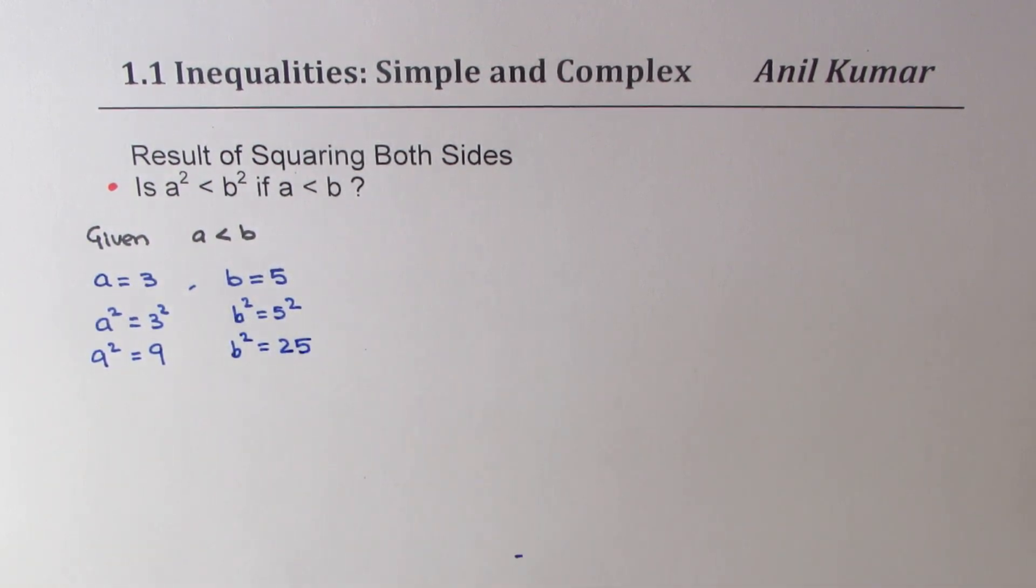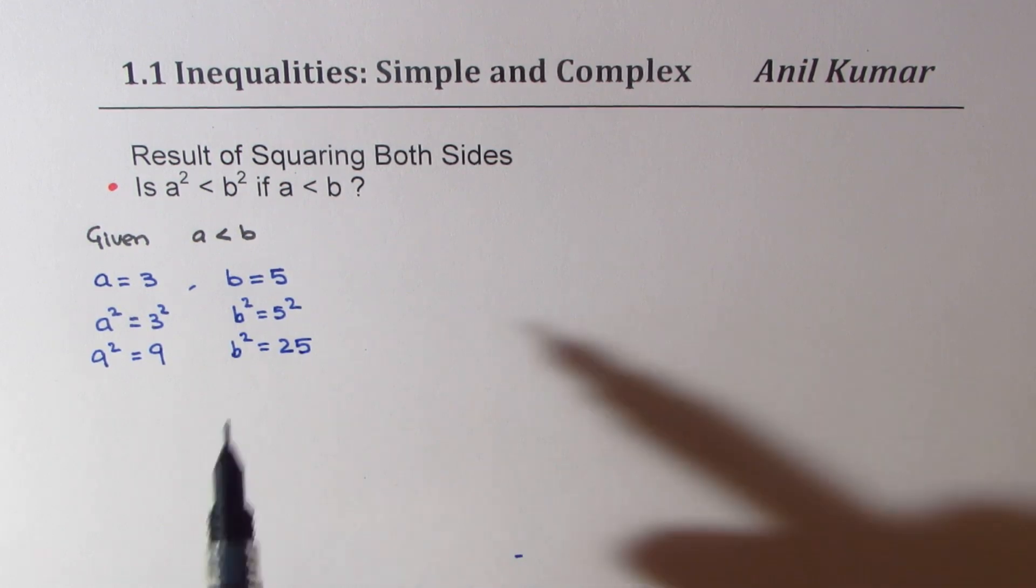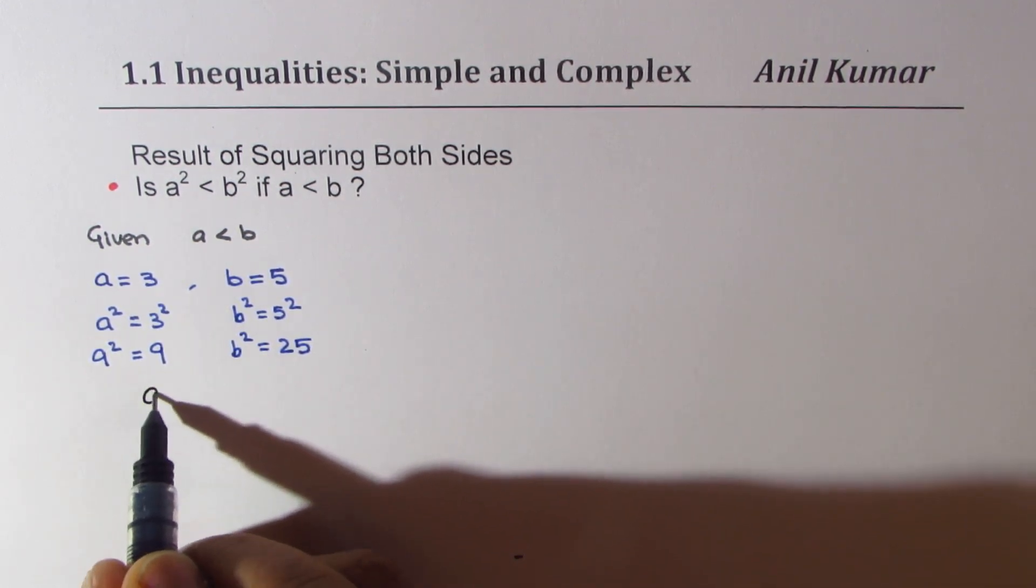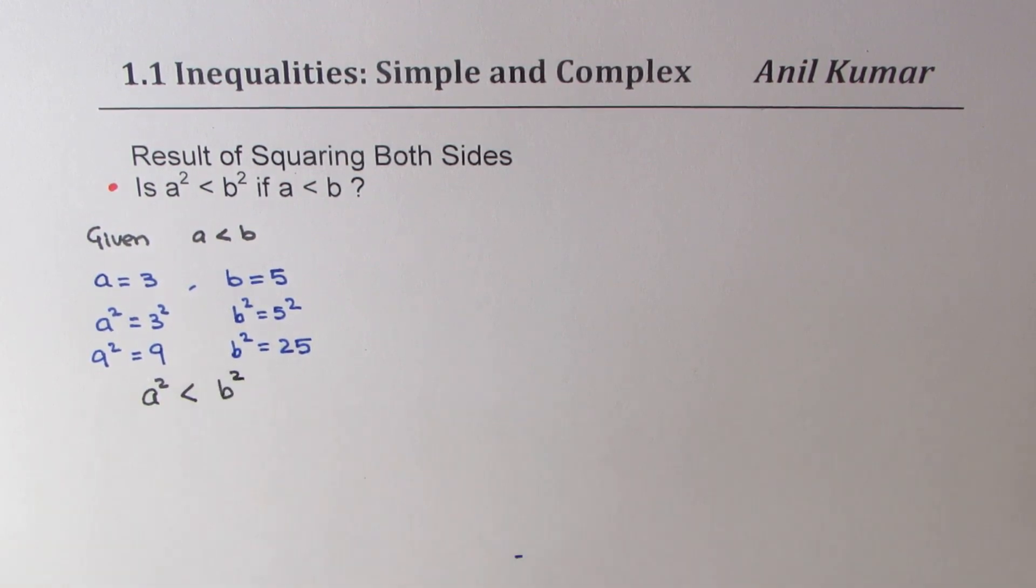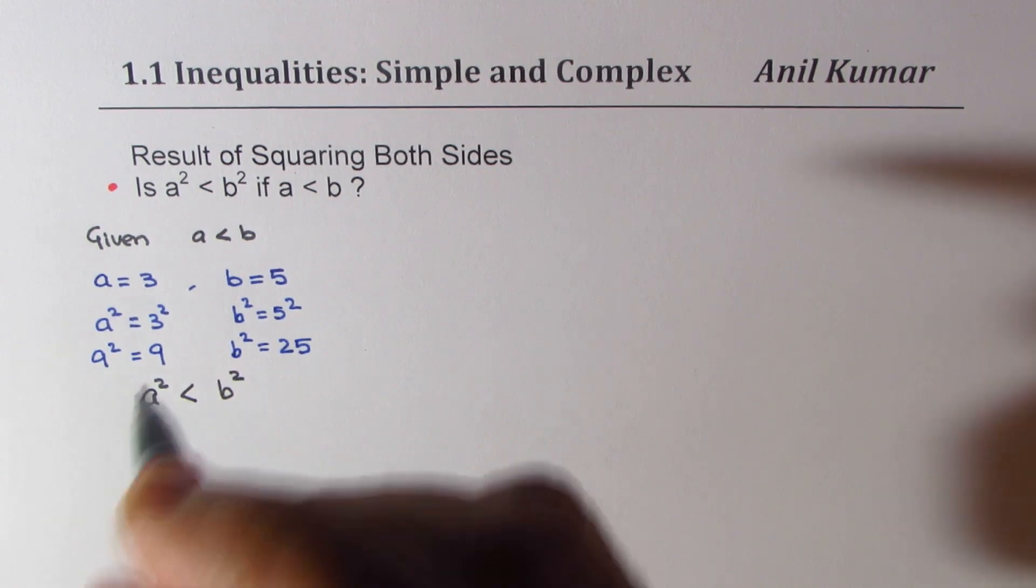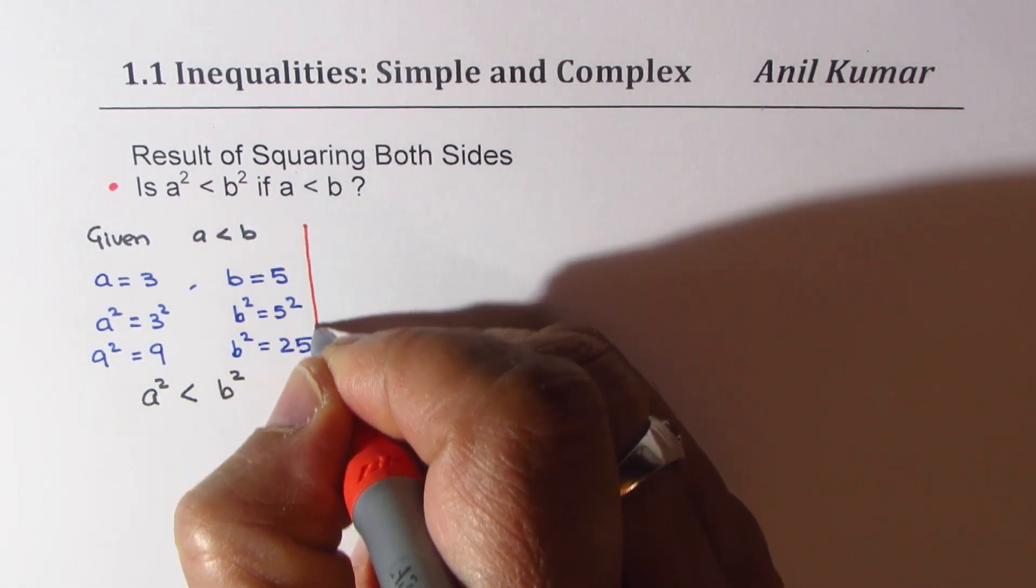From here, it is very clear that b² is greater. So, we can say that a² < b². Perfect. So, this is expected. Most of you have got this part for sure.